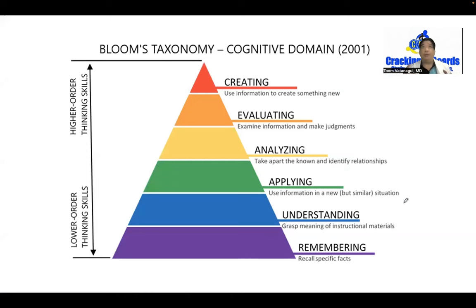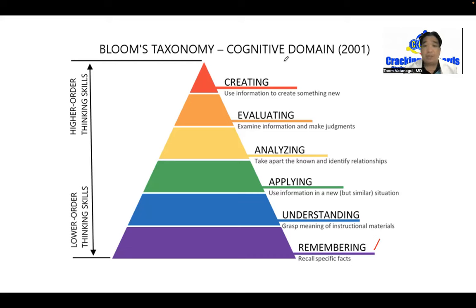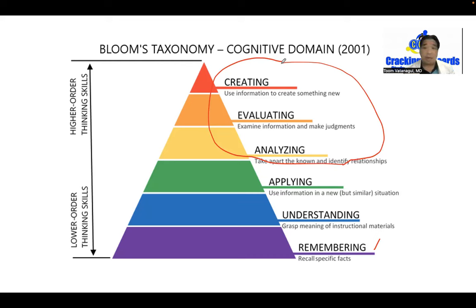Before we go with our rationalization, I just want to remind everyone of Bloom's taxonomy of cognitive domain, wherein there are several tiers of thinking skills and learning, which begins with remembering, understanding, application, analysis, evaluation, and creation. Please take note that the recent PLE boards, majority of the questions, focuses on higher order thinking skills, which is creation, evaluation, and analysis. Less emphasis is placed on pure recall and remembering.